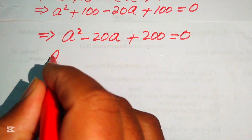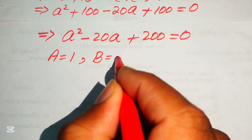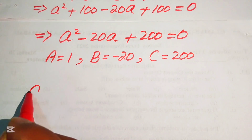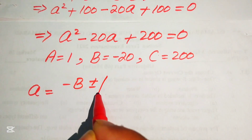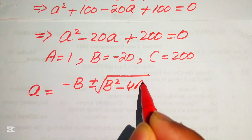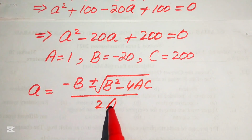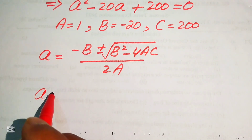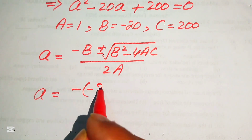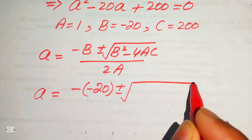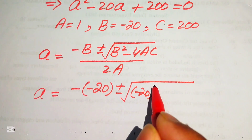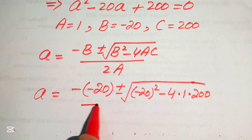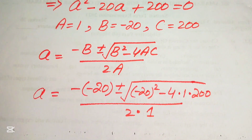We solve this quadratic using the quadratic formula. The coefficients are: A equals 1, B equals minus 20, and C equals 200. The quadratic formula is: a equals minus B plus or minus square root of (B squared minus 4AC), divided by 2A. Substituting: a equals minus(minus 20) plus or minus square root of [(minus 20) squared minus 4 times 1 times 200], divided by 2 times 1.